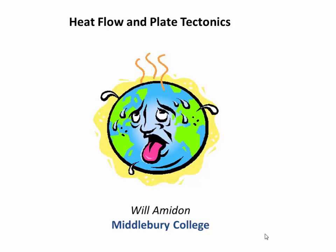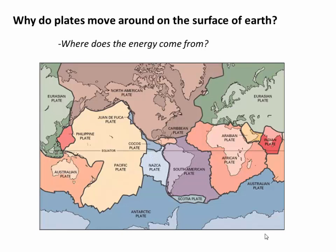Welcome to our video on heat flow and plate tectonics. Earth is divided into 12 huge tectonic plates that move laterally along the surface of the spherical Earth. Imagine how much energy this takes — huge blocks of rock grinding against each other, generating earthquakes and volcanoes. So where does this energy come from? What actually drives this system to persist over millions and millions of years?